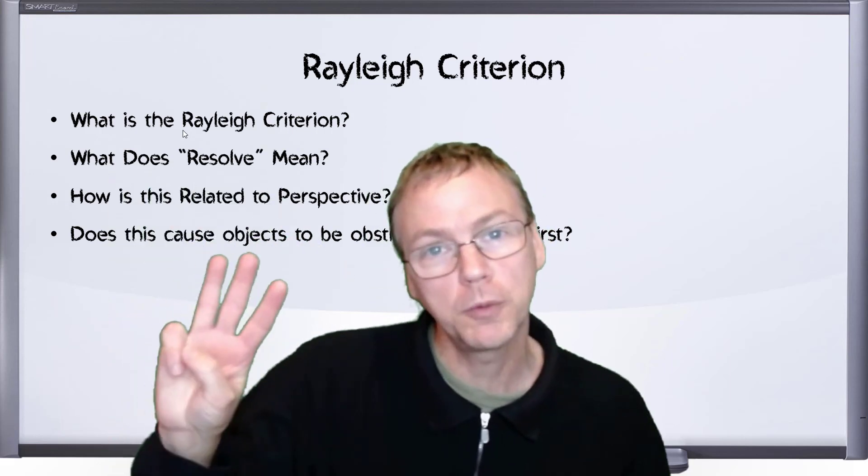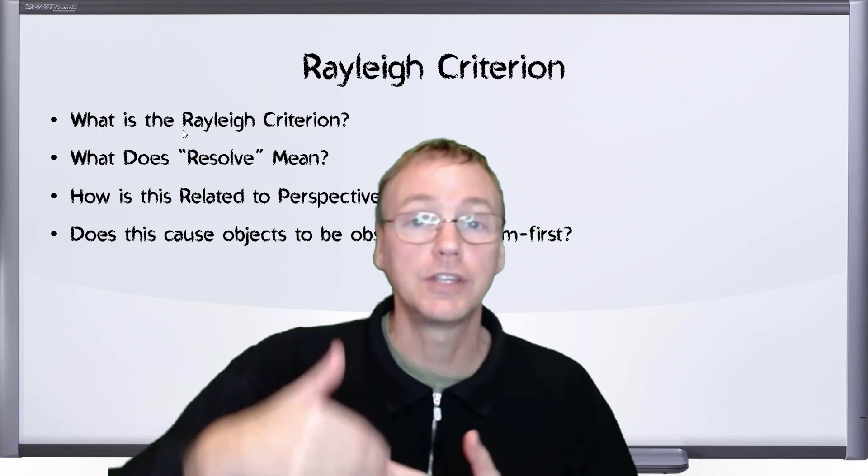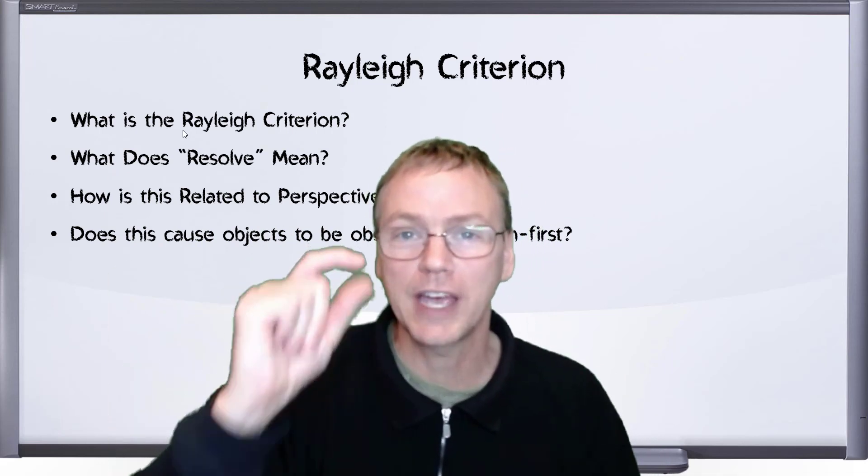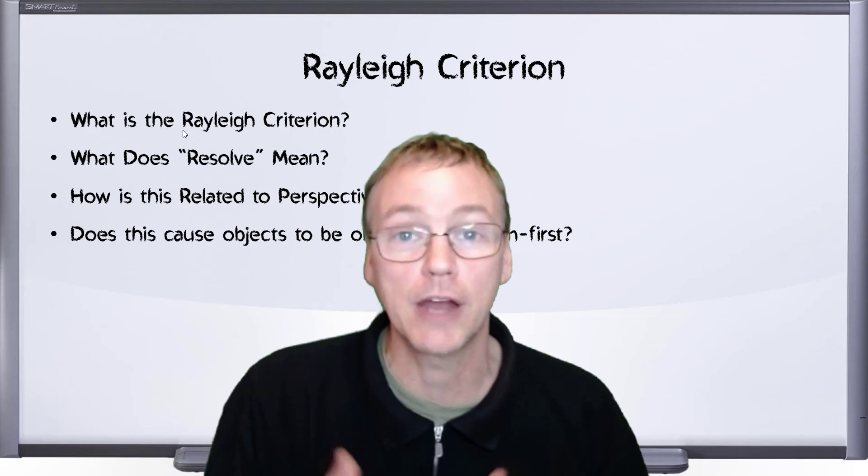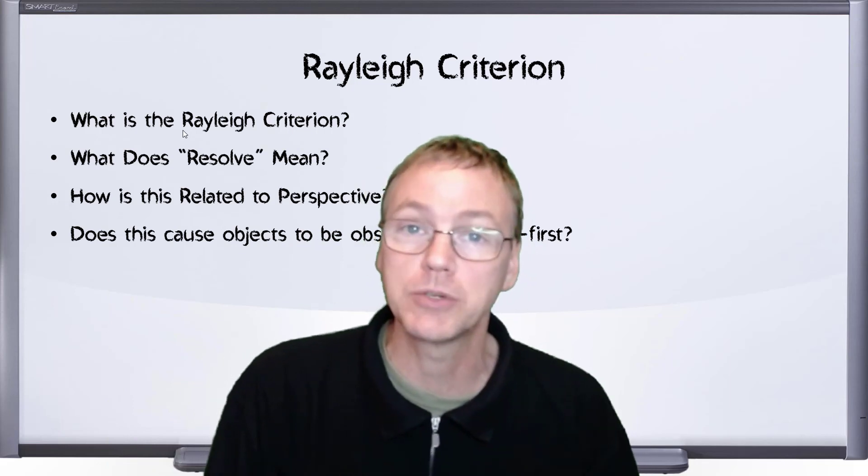In the third video, we reviewed perspective and how the distance of the object causes its angular size to get smaller. And that in turn will feed back into that Rayleigh Criterion and cause the object to become unresolvable.